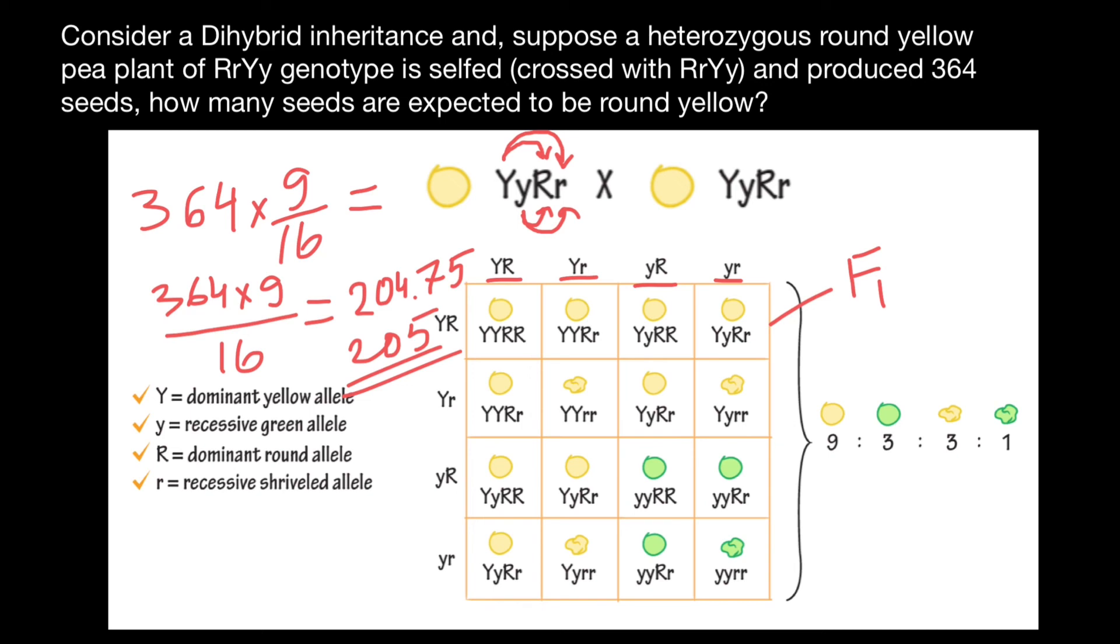And this is going to be our answer. One more time, out of 364 seeds, we expect about 205 seeds to be round and yellow. But please understand that this is not an exact number. This is just an approximation. And this is all for today.